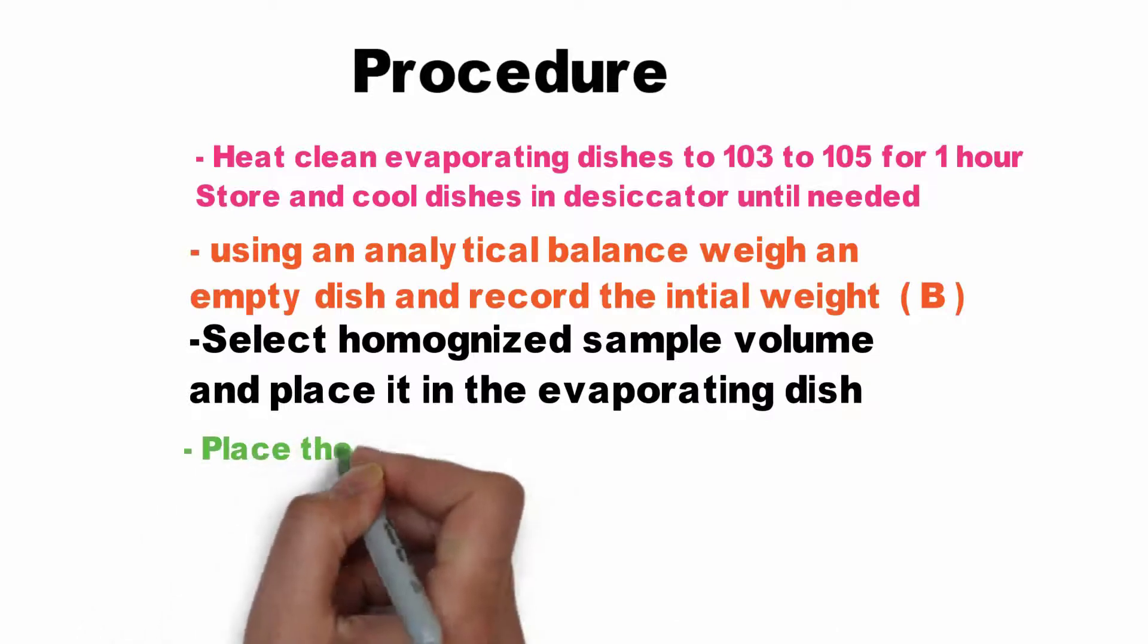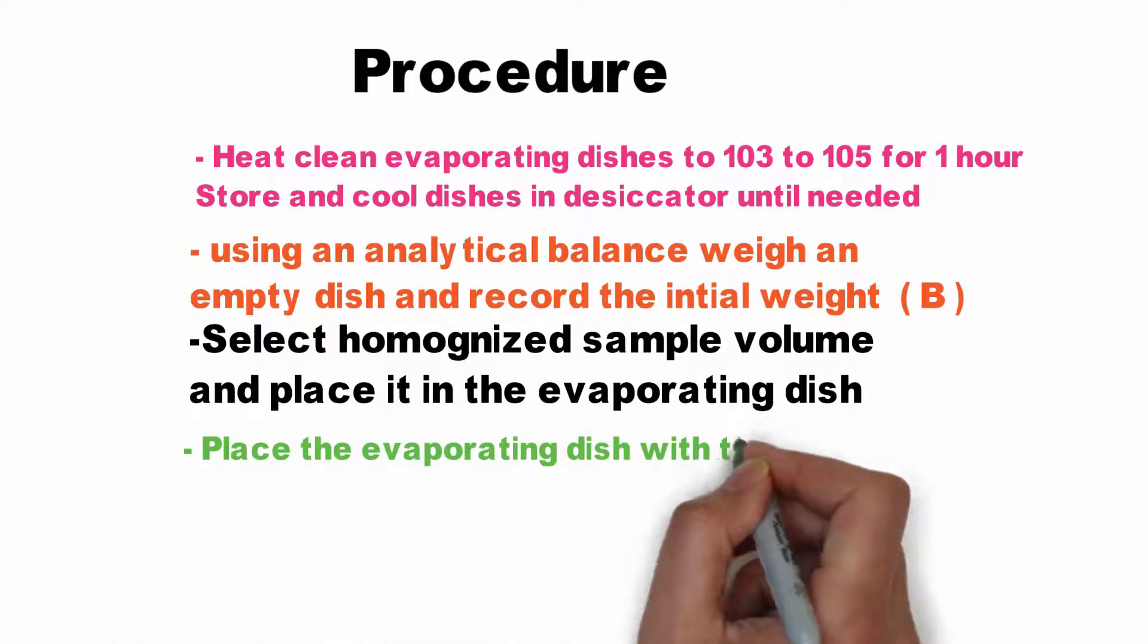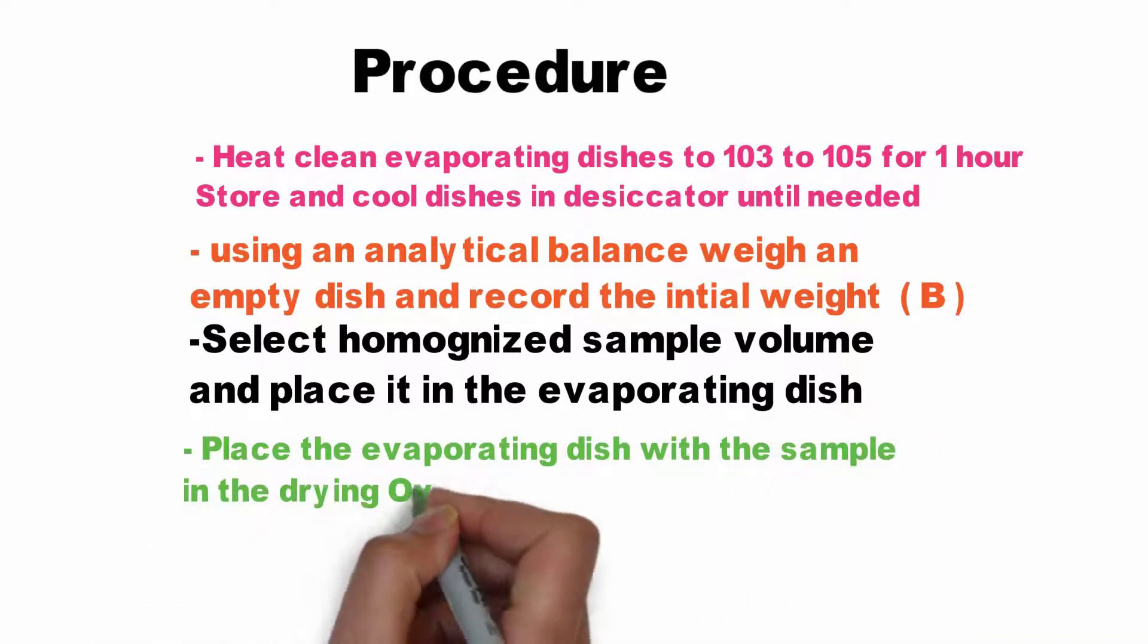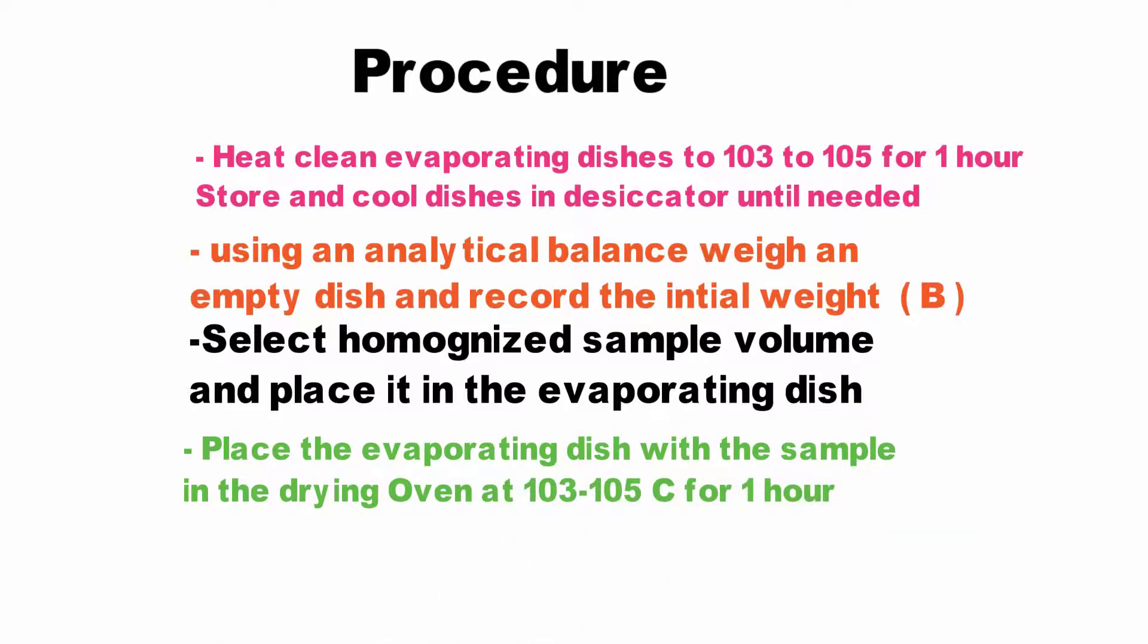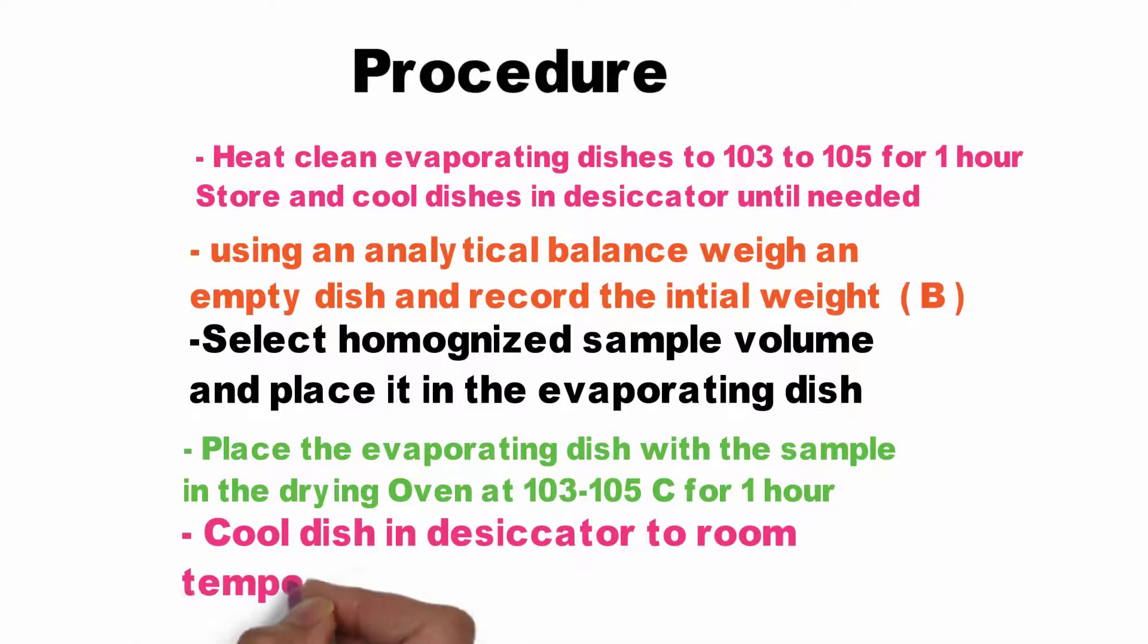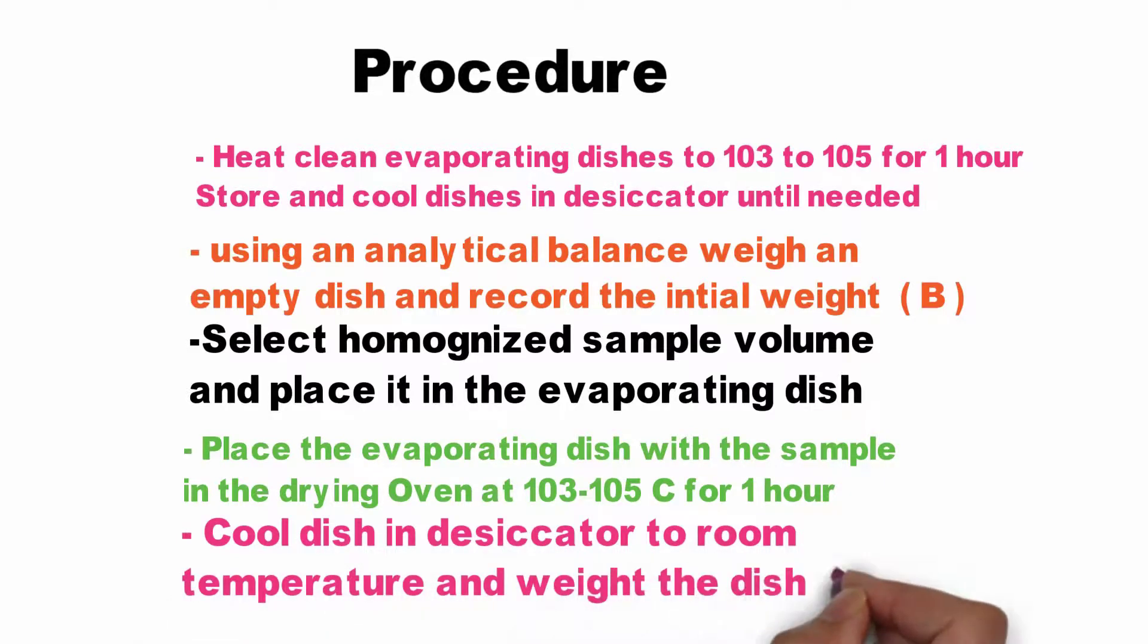Place the evaporating dish with the sample in the drying oven at 103 to 105 degrees for one hour. Cool the dish in a desiccator to room temperature and then take the final weight.